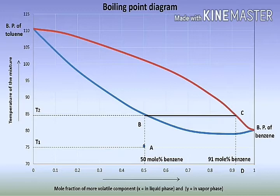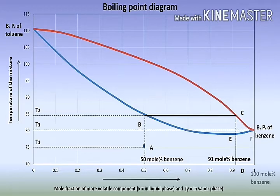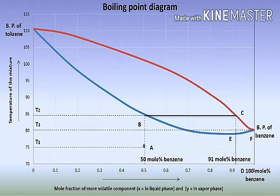If we remove the portion of vapours represented by point C and condense it completely, we get liquid represented by point T, which contains 91 mol% of benzene. If we reheat this liquid represented by point T, it will boil at temperature T3 degrees Celsius. The first vapour arising from the liquid, represented by point E, will have a composition represented by point F. If we condense this vapour at point F, we get liquid containing 100 mol% of benzene.